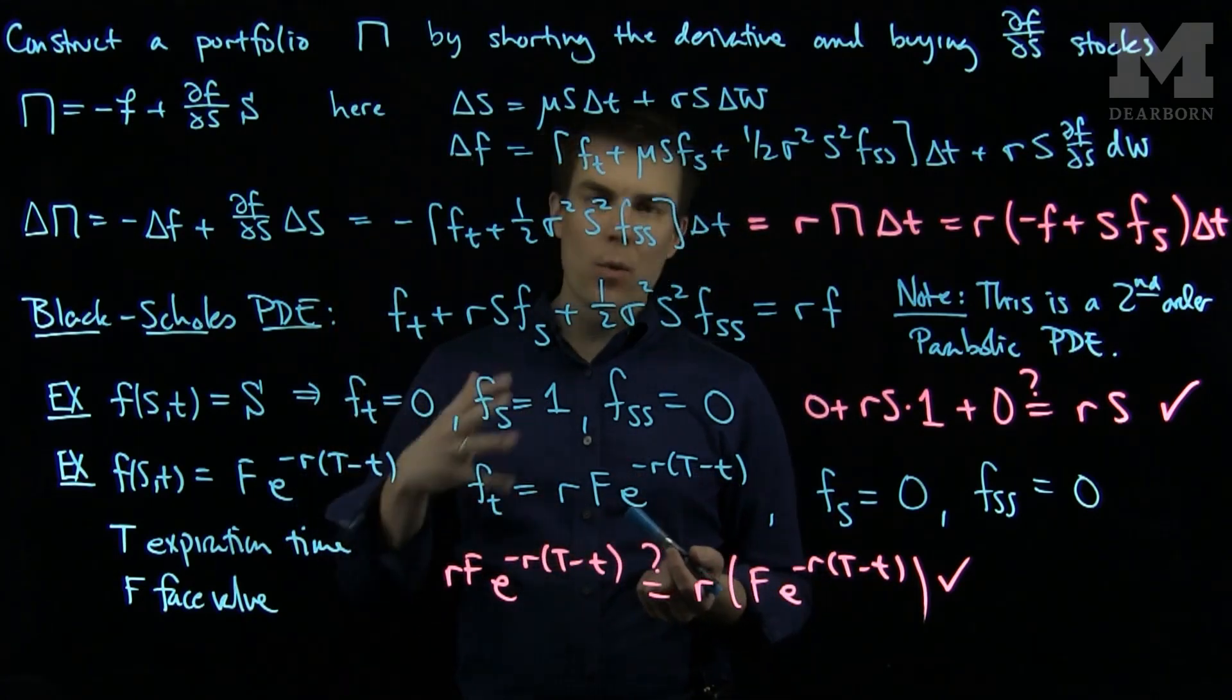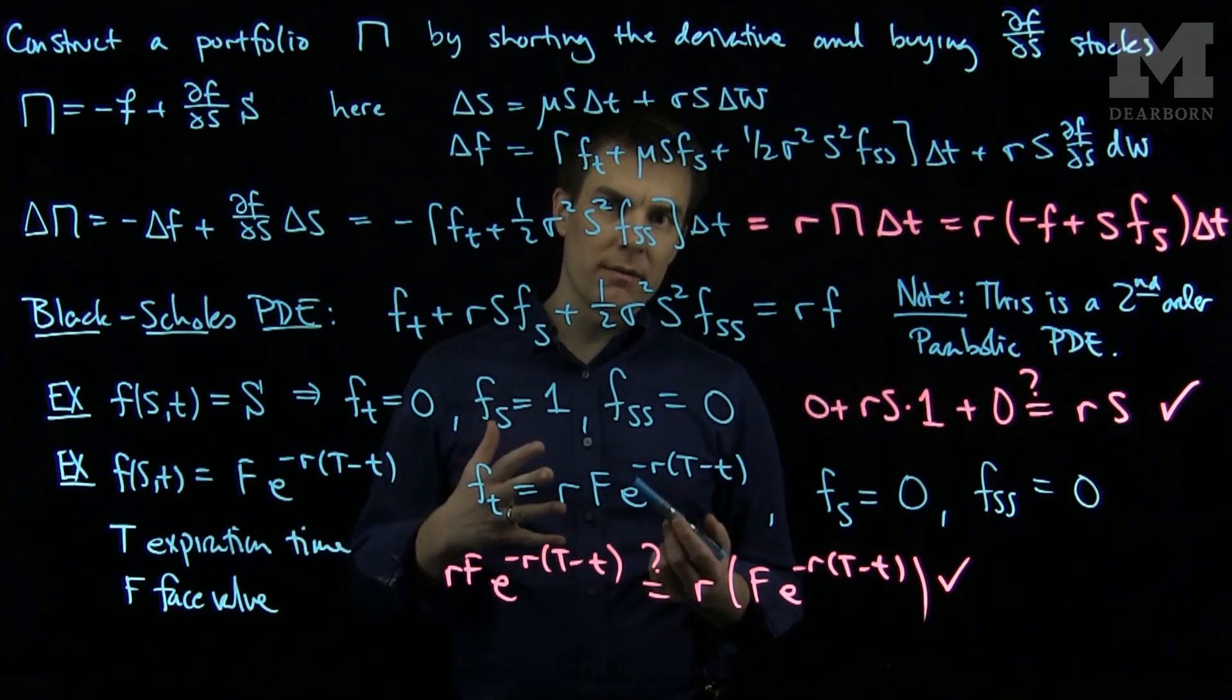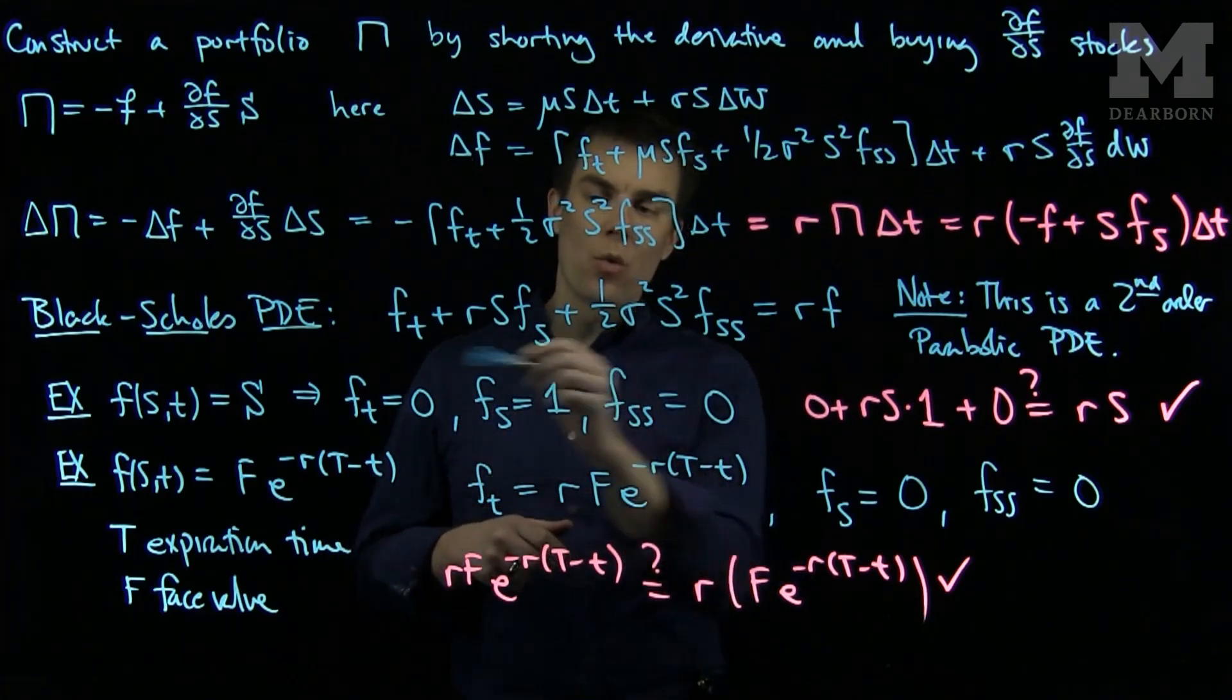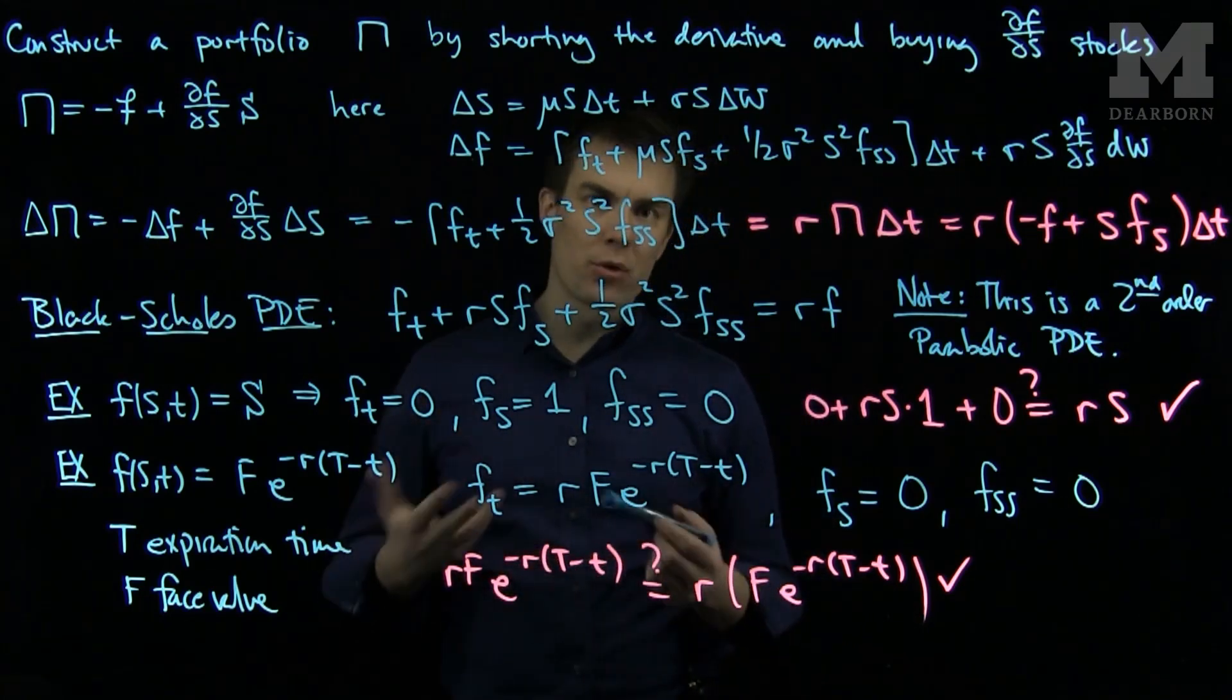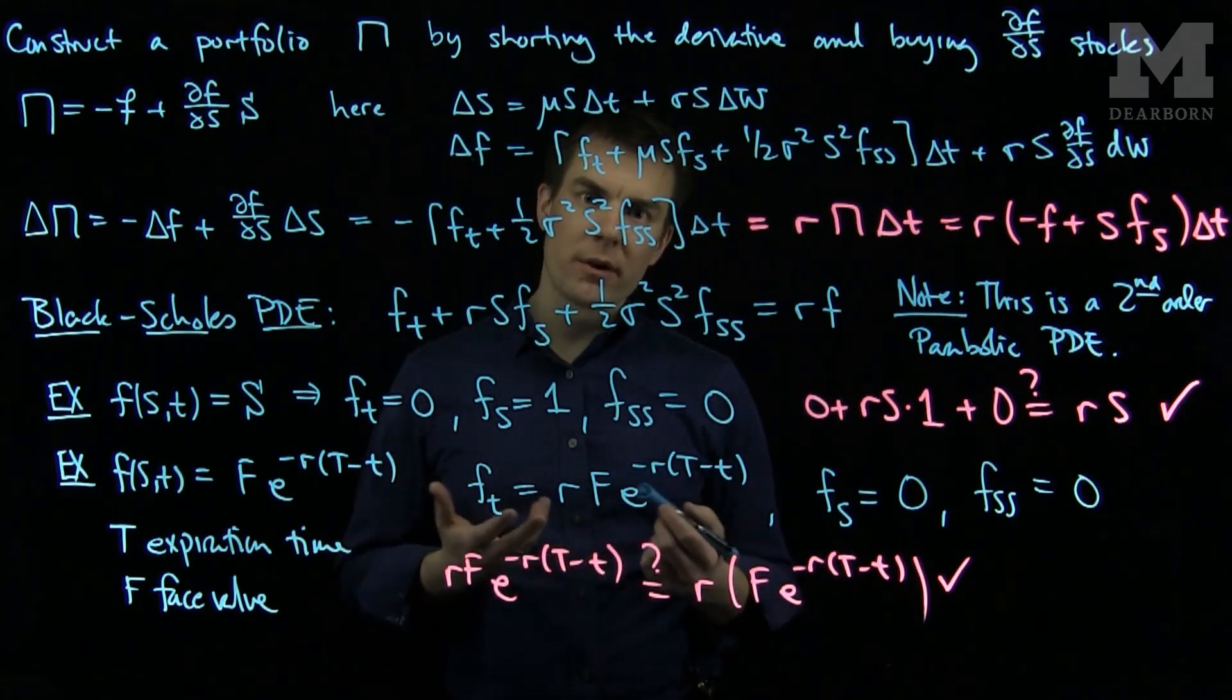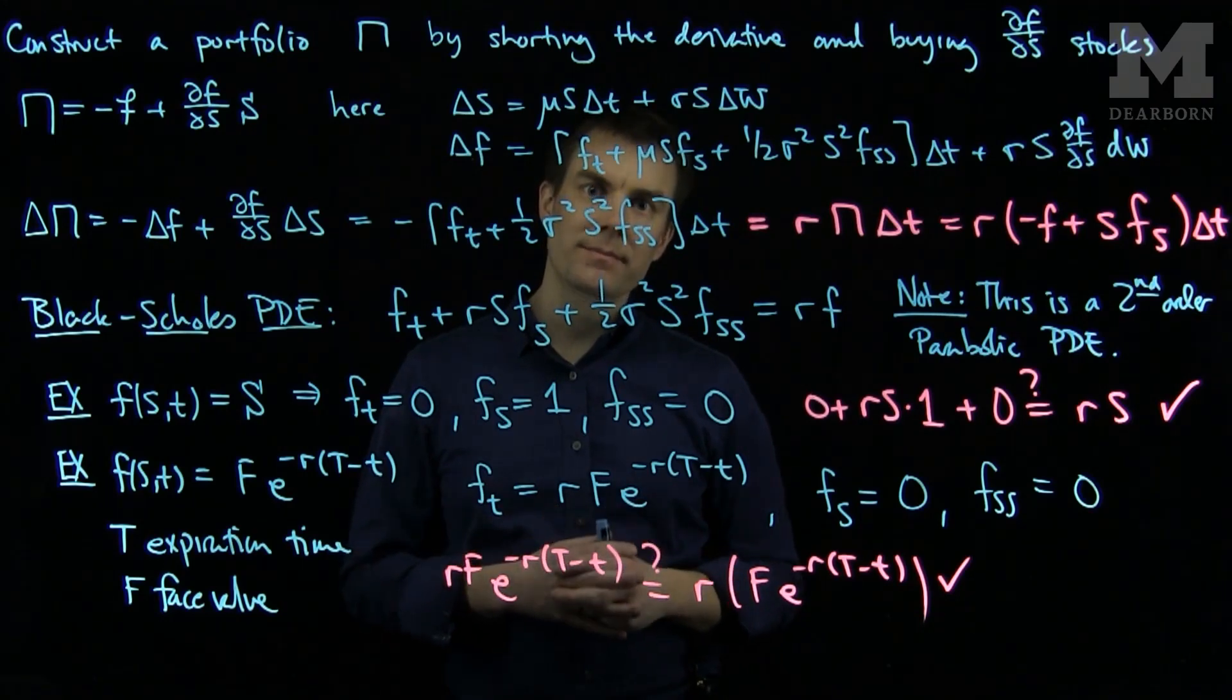Now, every time we want to verify something is a derivative and is priced with respect to the arbitrage principle, we must verify that it satisfies this partial differential equation with the appropriate terminal value. In further videos, we'll see further examples of this. Thank you very much.